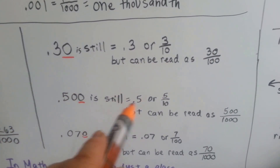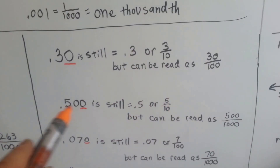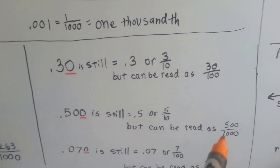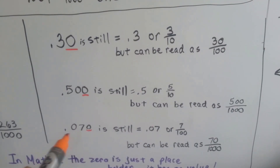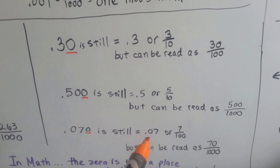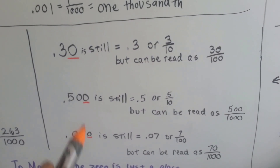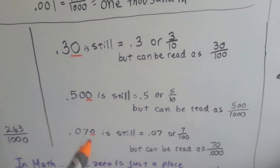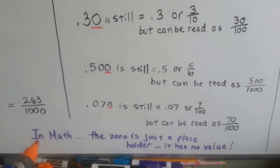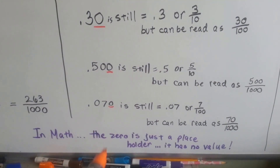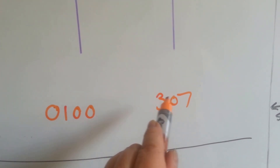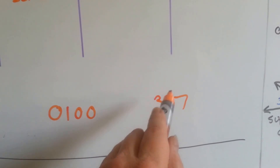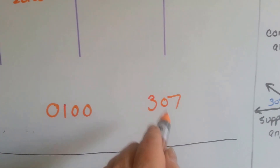Point-five-zero-zero is still point-five, or five-tenths, but it can also be read as five-hundred-one-thousandths because the last zero is in the thousandths place. Point-zero-seven-zero can be seven-hundredths because the seven is in the hundredths place, or we could say it's seventy-one-thousandths. Always remember in math: the zero is just a placeholder, it has no value. In the number three-hundred-seven, that zero has no value — it's just keeping the three and the seven apart so you know there are no tens.